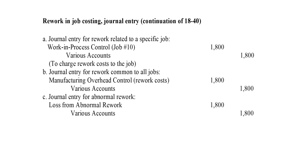To record the journal entry for rework related to a specific job: work in process control will be debited by $1,800, and the credit side will be the various accounts. If the rework is normal but occurs because of the requirements of a specific job, the rework costs are charged to that job.